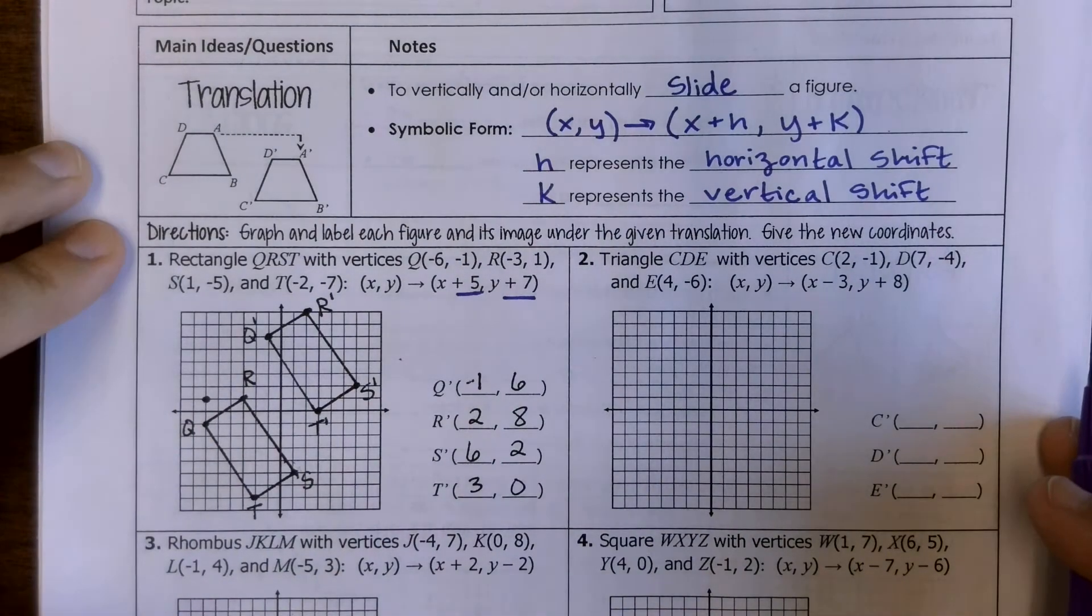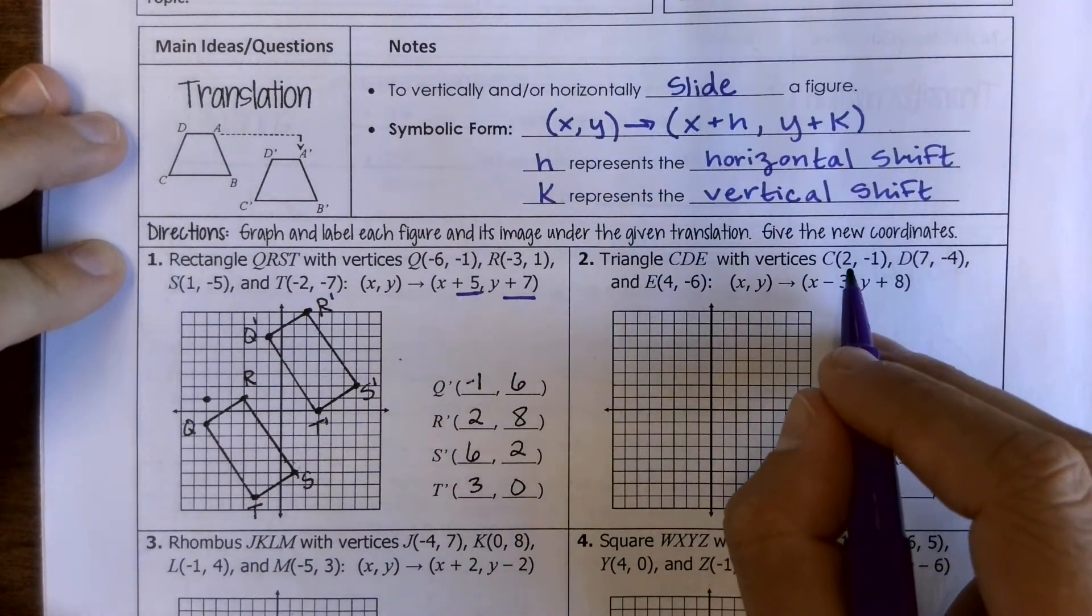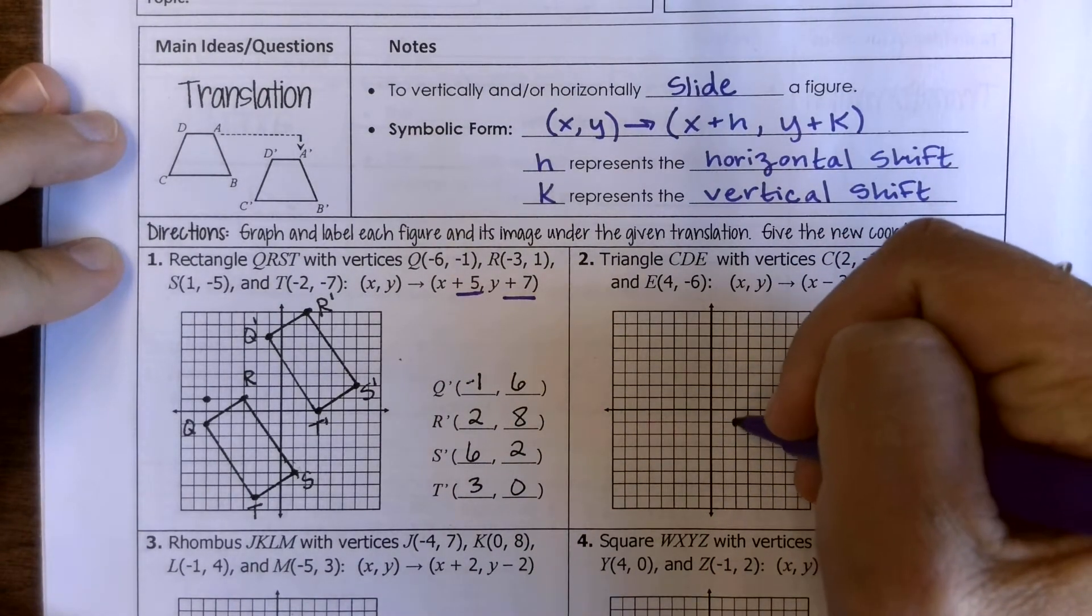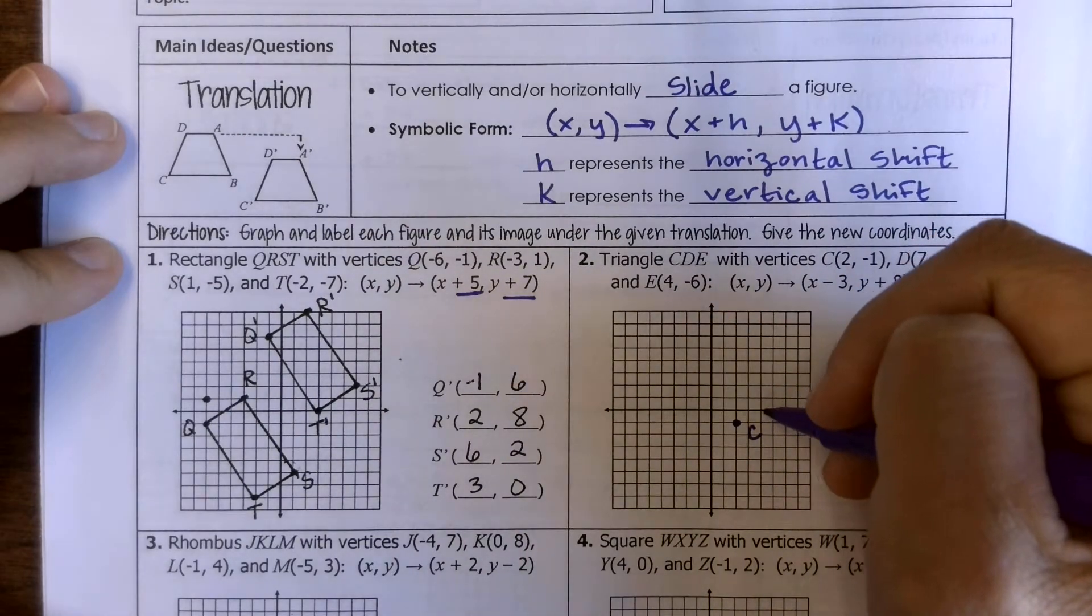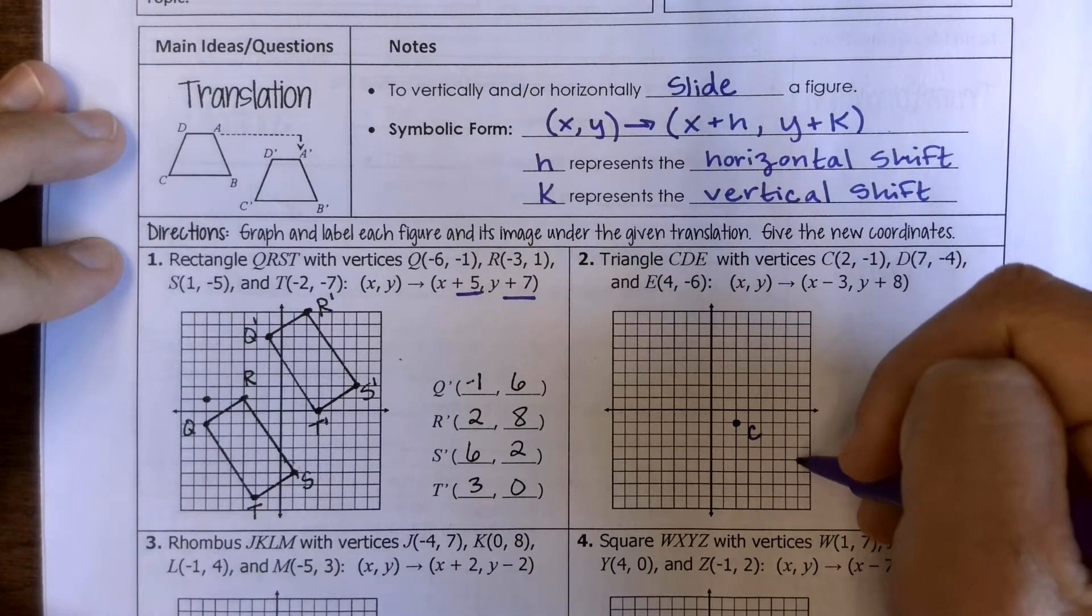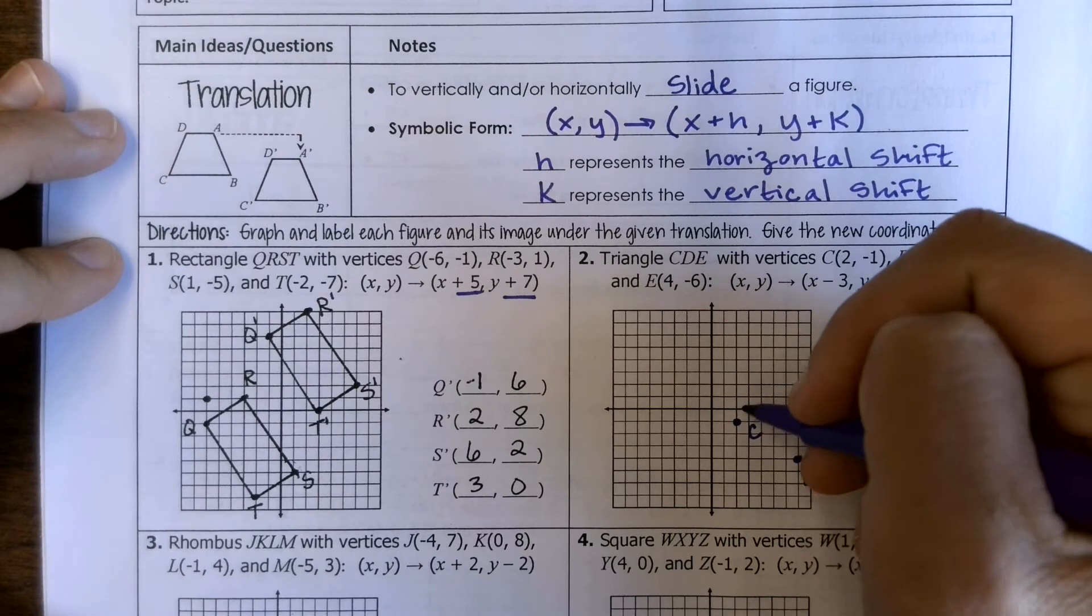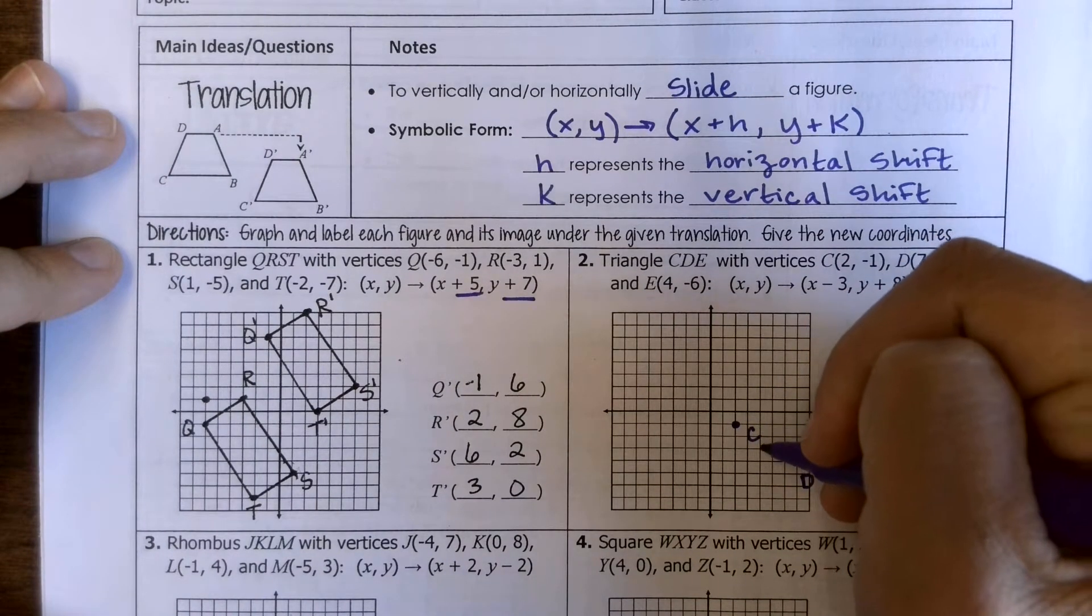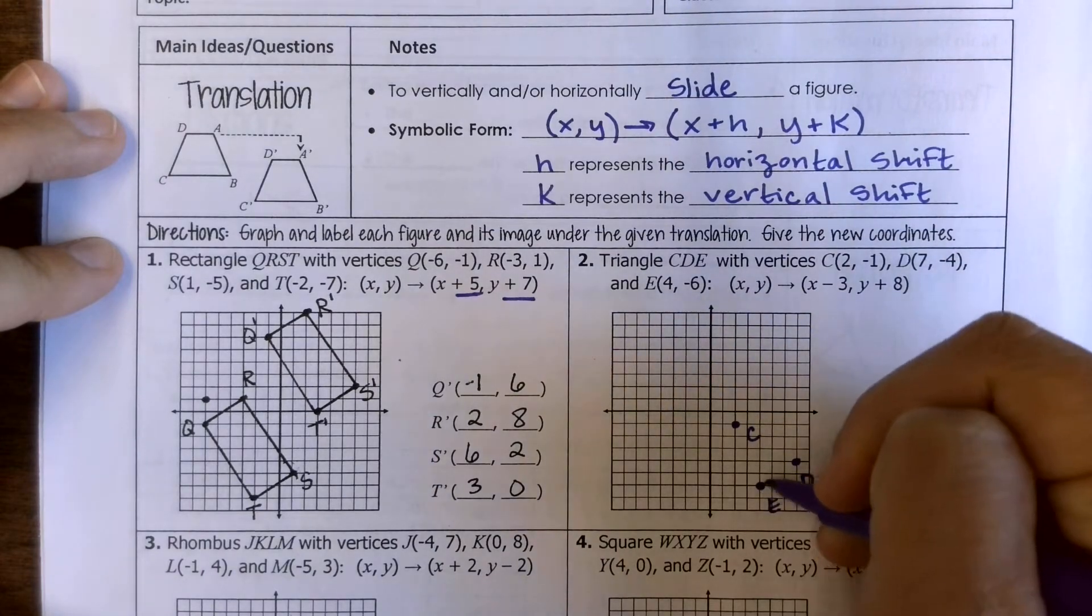So let's go ahead and do number 2 together. So I've got CDE, a triangle with vertices at 2, negative 1. So go ahead and plot your pre-image, 7, negative 4, and then E at 4, negative 6. So there's E.